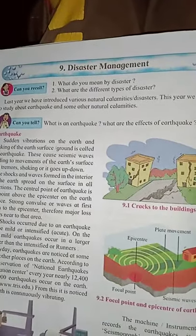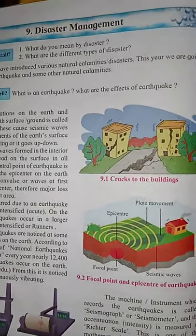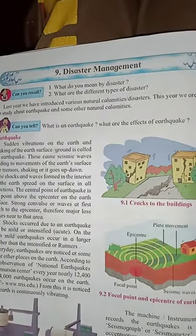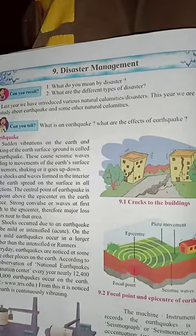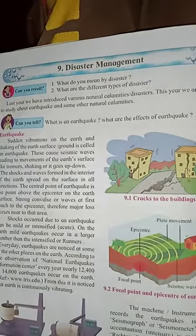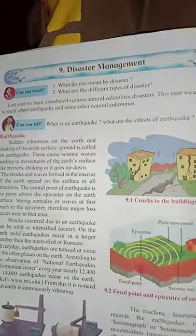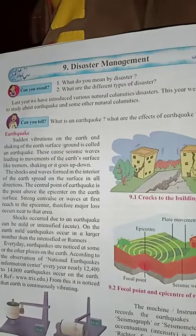This year we are going to study about the earthquake and some other natural calamities, their causes and effects. What is an earthquake? An earthquake is caused by sudden vibration felt due to shaking of the earth's surface or ground. Earthquakes are caused due to seismic waves, and these waves cause the movement of the earth's surface, which is perceived as a tremor or shaking.